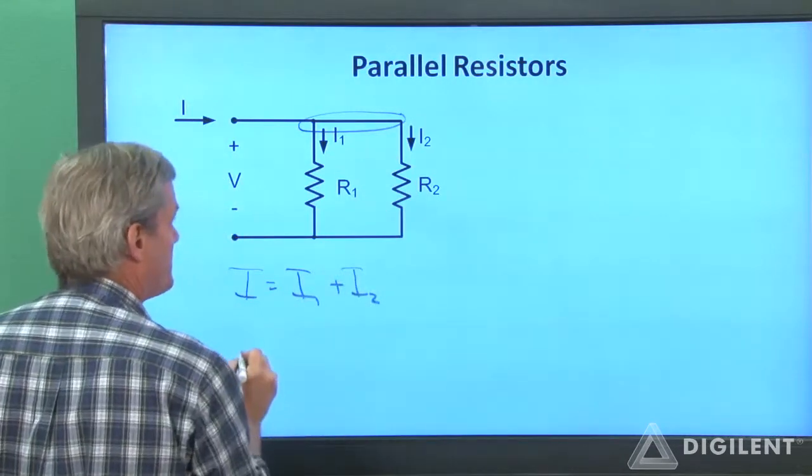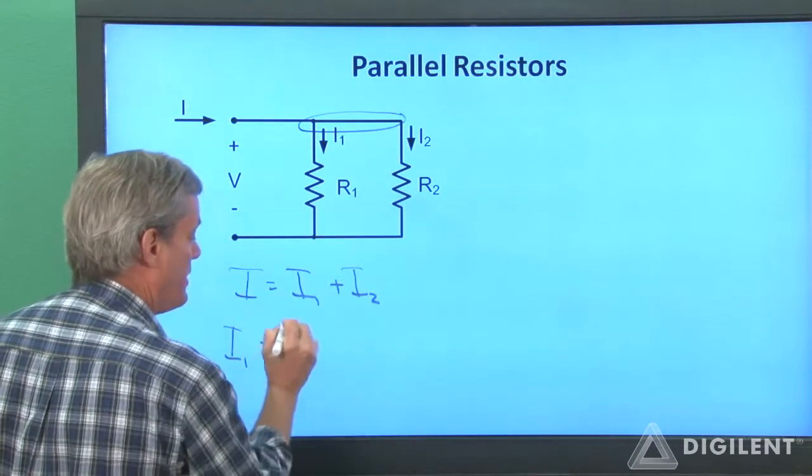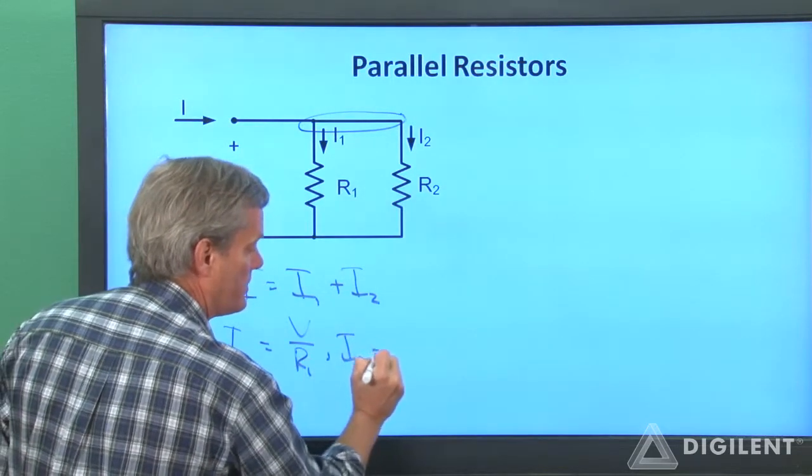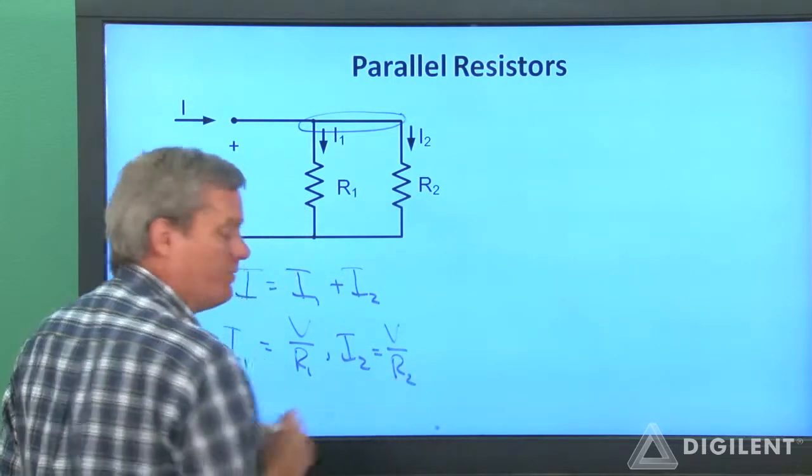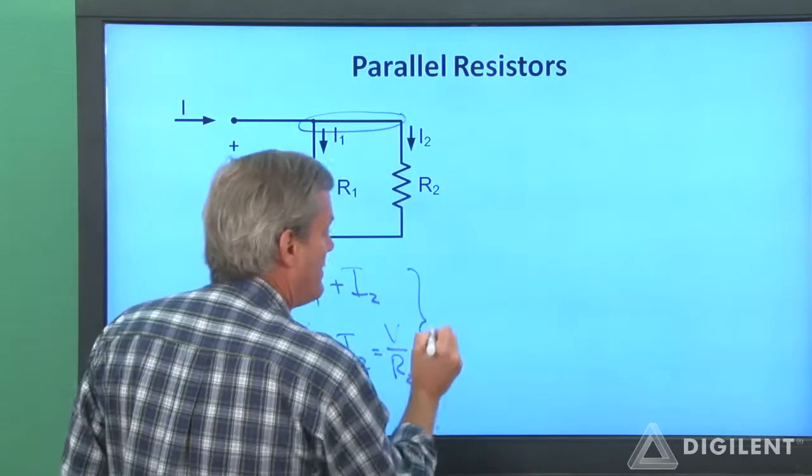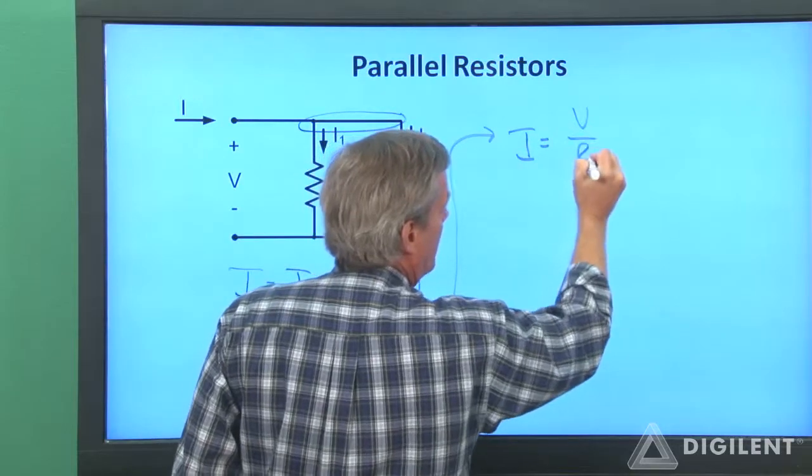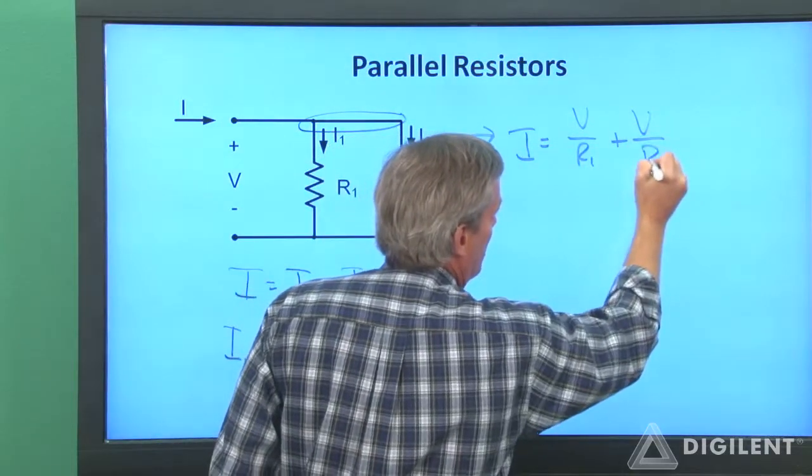Ohm's law across each of these resistors says that I1 is equal to V over R1 and I2 is equal to V over R2. Now if I combine these two guys, I get that I is equal to V over R1 plus V over R2.